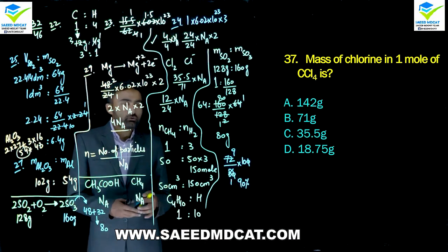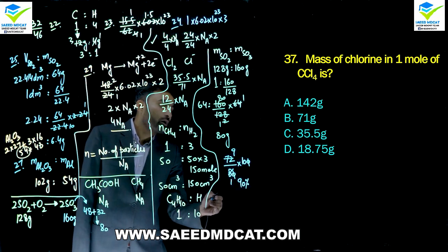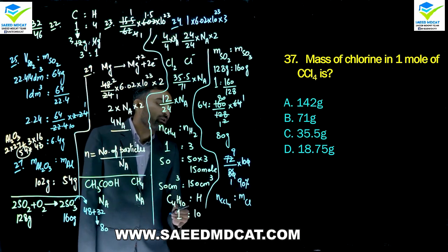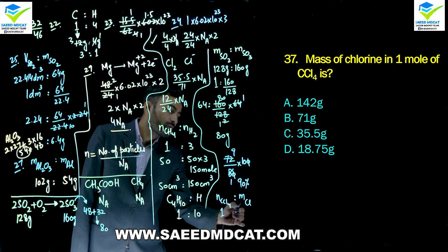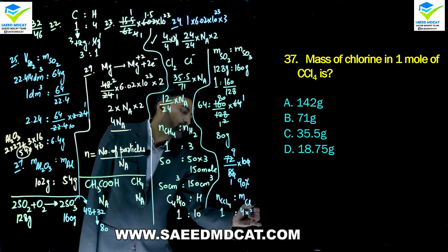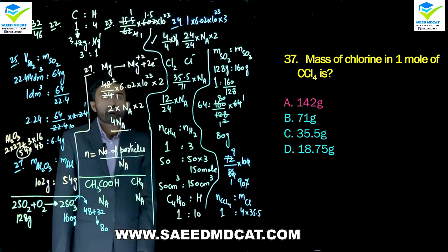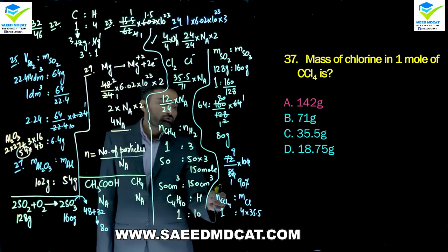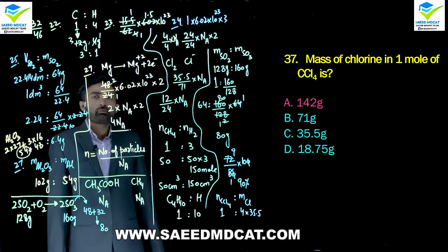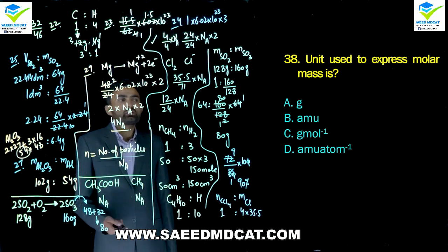Question 37: Mass of chlorine in one mole of CCl4. One mole CCl4 contains 4 moles of Cl, each with molar mass 35.5 g. Total chlorine mass = 4 × 35.5 = 142 g. Alpha option (142 g) is correct.